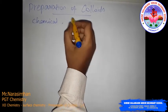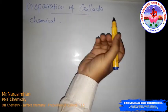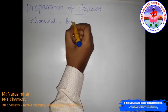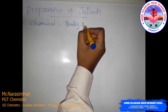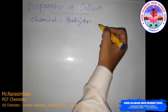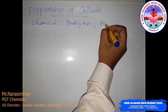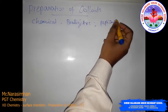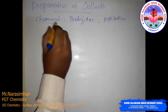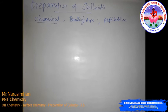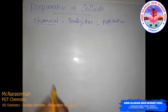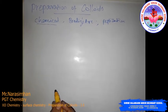The second one is the Bredig's Arc method, or electrical disintegration method. The third is peptization. First, we will discuss the chemical method — how to prepare the colloidal sol using the chemical method.